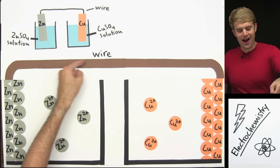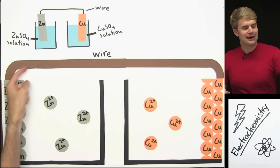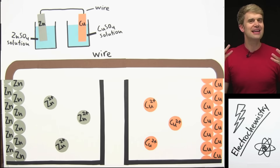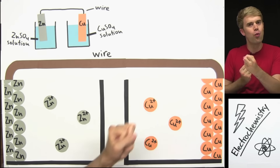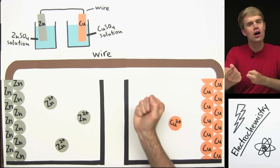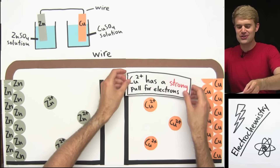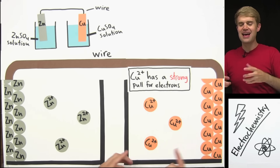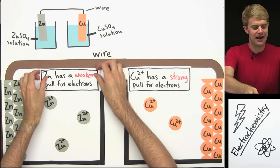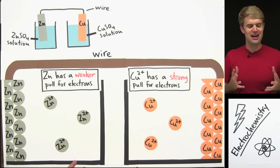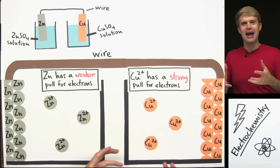We have a wire connecting the zinc and the copper, and when everything is hooked together electrons start flowing. Why? Well, when we connect these two pieces of metal with wire it starts a tug of war between zinc and copper for the electrons. It turns out that Cu2+ has a really strong pull for electrons, while zinc has a weaker pull. So in this tug of war, Cu2+ ends up winning.